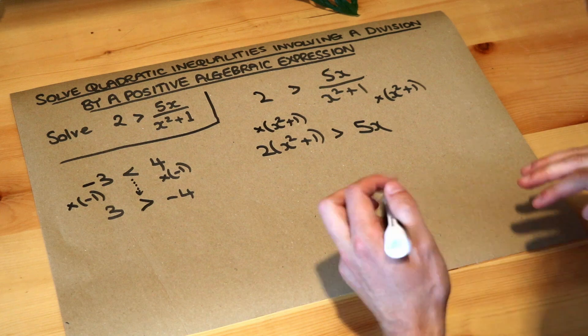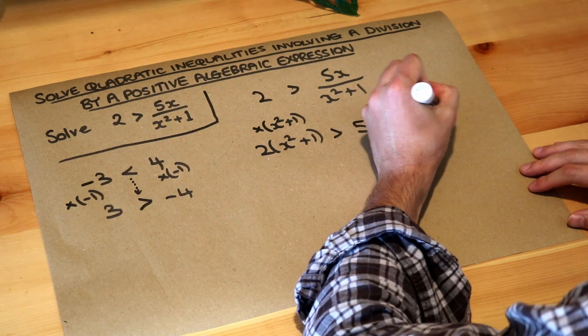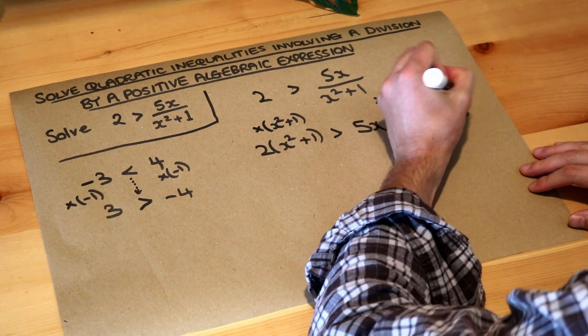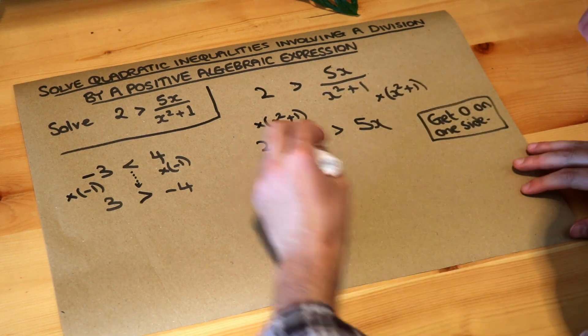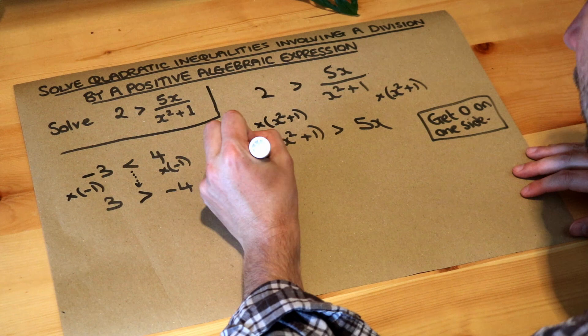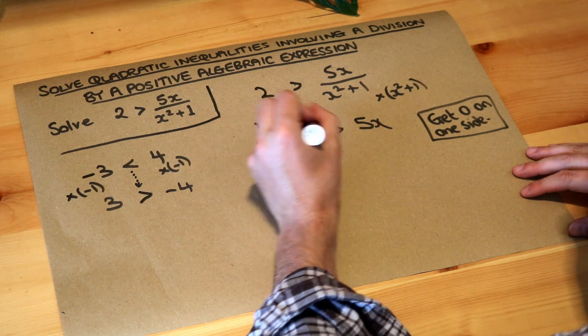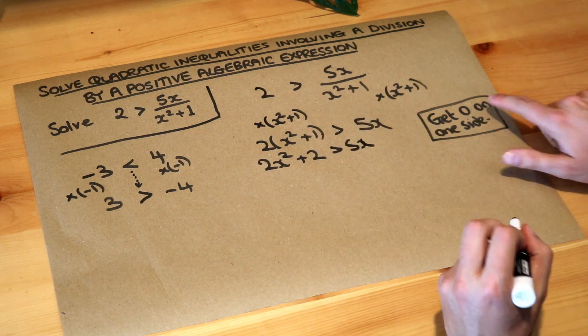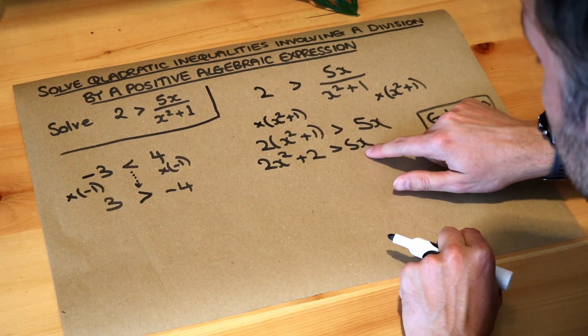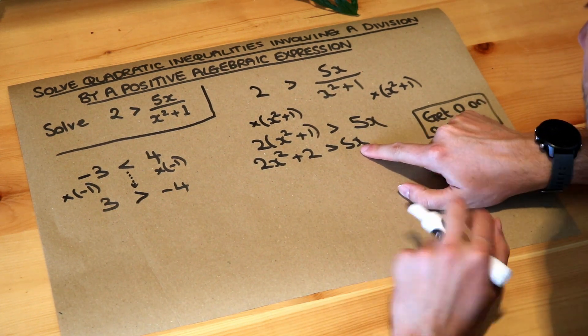Now what do we do now? We want to get zero on one side and we also want to expand out any brackets that we have. So let's expand out the brackets. Two times x squared is 2x squared. Two times the one is plus two and we've got the greater than 5x. We need zero on one side so we want to have zero here. We're going to subtract 5x from both sides.